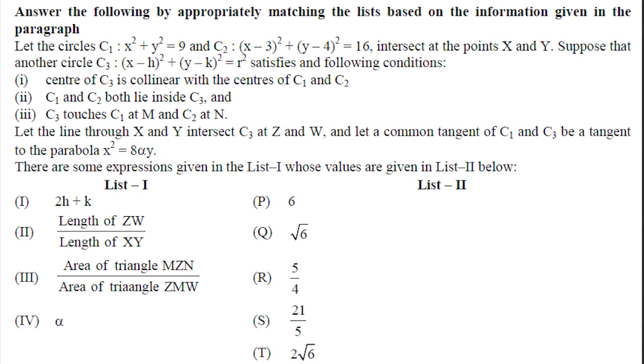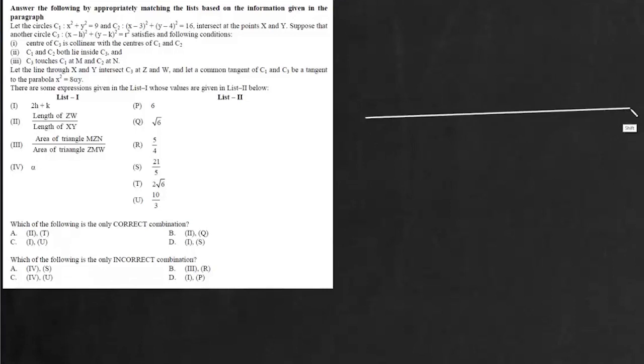So basically we have two given circles and this first circle center at origin and radius 3 units. This second circle will center it 3,4 and radius 4 units. So here this radius is 3 and this radius is 4 units and distance between center is 5. So basically this angle is 90 degrees.